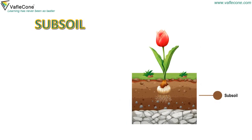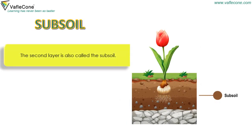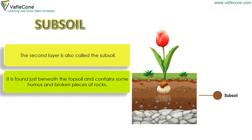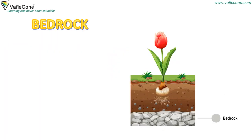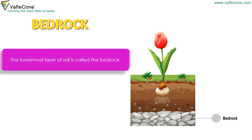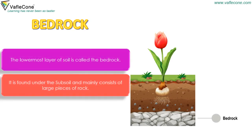Subsoil: The second layer is also called the subsoil. It is found just beneath the topsoil and contains some humus and broken pieces of rocks. Bedrock: The lowermost layer of soil is called the bedrock. It is found under the subsoil and mainly consists of large pieces of rock.